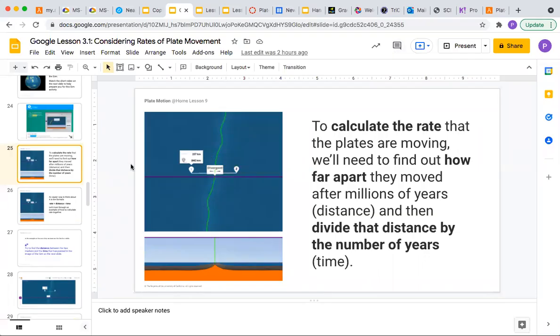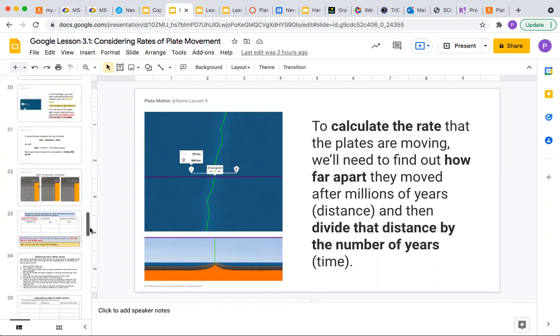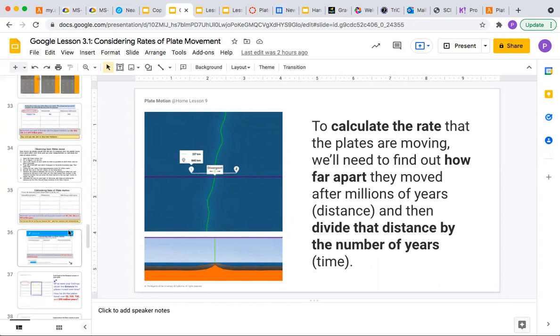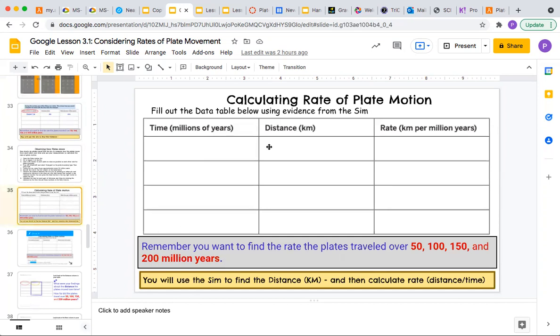Now that you've gone through how to use the sim to collect the distances, I'm going to talk to you about calculating the rate. Remember that you are collecting the distances for these times: 50 million years, 100 million years, 150 million years, and 200 million years. On the chart, you'll put in the time and collect the distances from the sim.